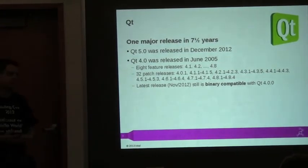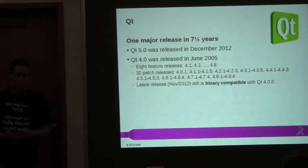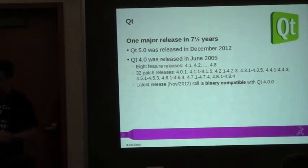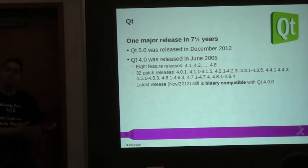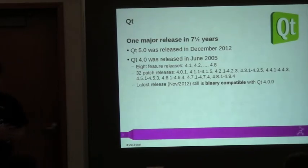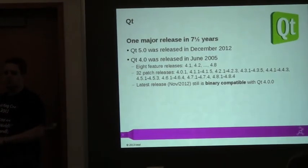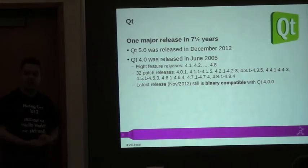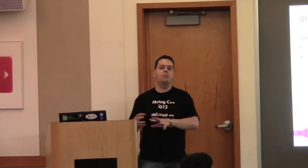Maintaining binary compatibility isn't new for us. With Qt 4 we maintained it for seven and a half years. Qt 4.0 was released in June 2005; binary compatibility set in at the 4.0.0 release. Since then, we had tons of patch releases without breaking binary compatibility, and more importantly, we had eight feature releases — 4.1, 4.2, all the way to 4.8 — where we added features, added members to classes, added new classes, modified behaviors, and fixed bugs. This presentation is about how we accomplished this.